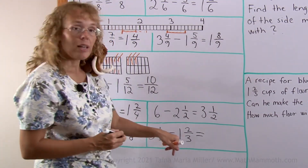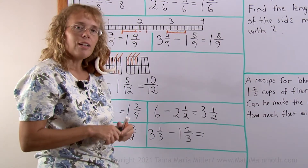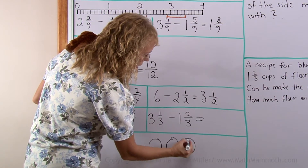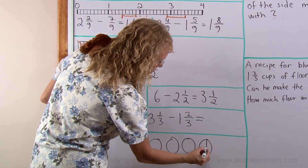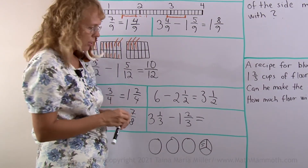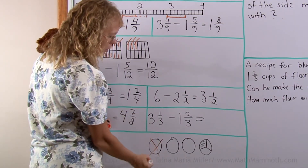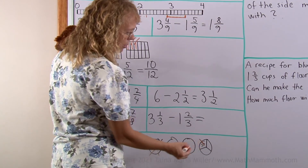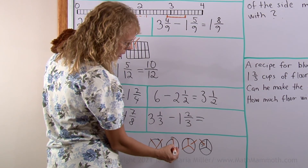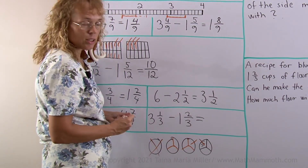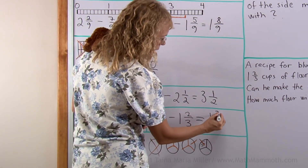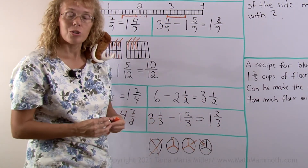3 and 1 third minus 1 and 2 thirds. Let me draw this one: 3 pies, and then a third of a pie. Then I take away 1 and 2 thirds — so I take away this one and a third, and then from this pie I need to take away a third too. This would be divided into thirds, but it is going to stay as a whole pie — a whole pie here and 2 thirds. So students can draw to help them with these problems.